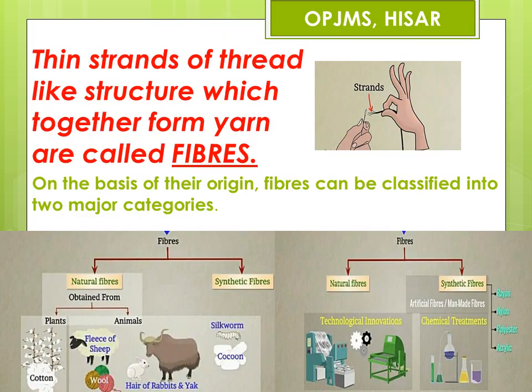By now you must have understood what fibers are. Fibers are very fine hair-like strands which are twisted together to form yarn. Depending upon their origin, fibers can be classified into two major categories: natural fibers and synthetic fibers. Synthetic fibers are also known as man-made fibers or artificial fibers.